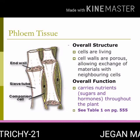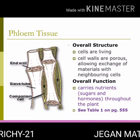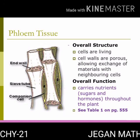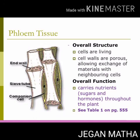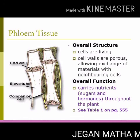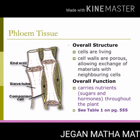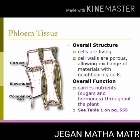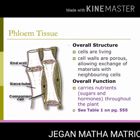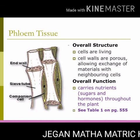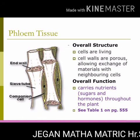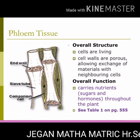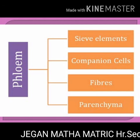Phloem cells are living cells with porous cell walls — porous means sponge-like — and they allow exchange of materials with neighboring cells. Phloem carries nutrients from one part to another wherever necessary. The food prepared by the leaf is taken from the leaf to wherever it is needed throughout the plant. Phloem is a complex tissue.